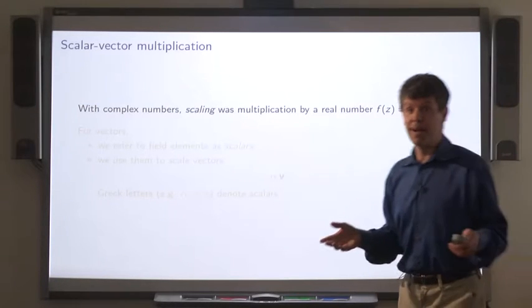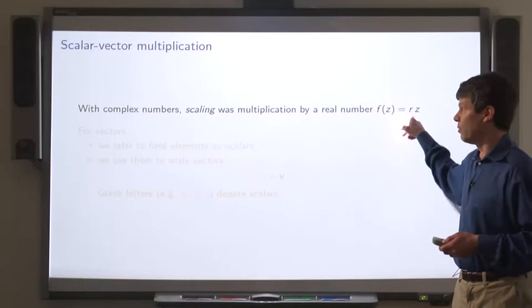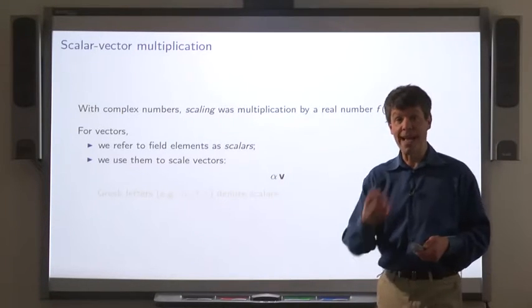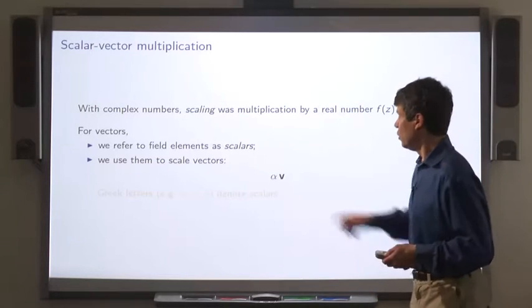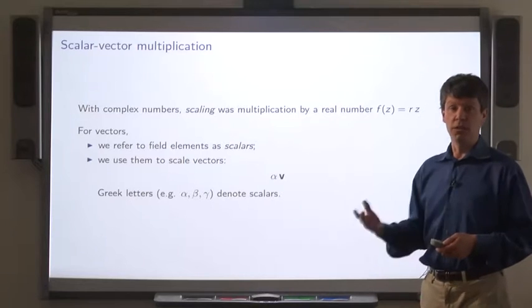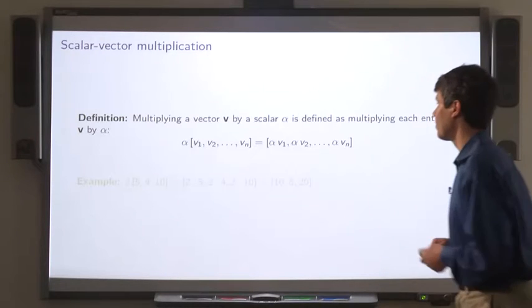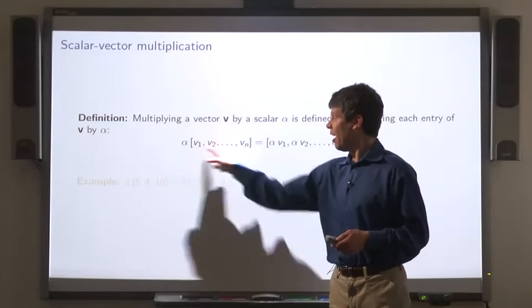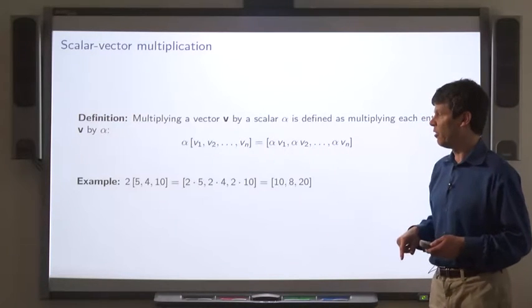Now, with complex numbers, we're able to scale them, make them bigger or smaller, by multiplying by real numbers. We're going to do the same thing for vectors. So we refer to field elements, such as real numbers, as scalars, and we use them to scale vectors using scalar-vector multiplication, which is indicated in this way. Now, I use alpha, beta, gamma, Greek letters to represent scalars in the context of scalar-vector multiplication. The formal definition goes like this: to multiply a vector by a scalar, you simply multiply each of the entries by that same scalar. Here's an example.